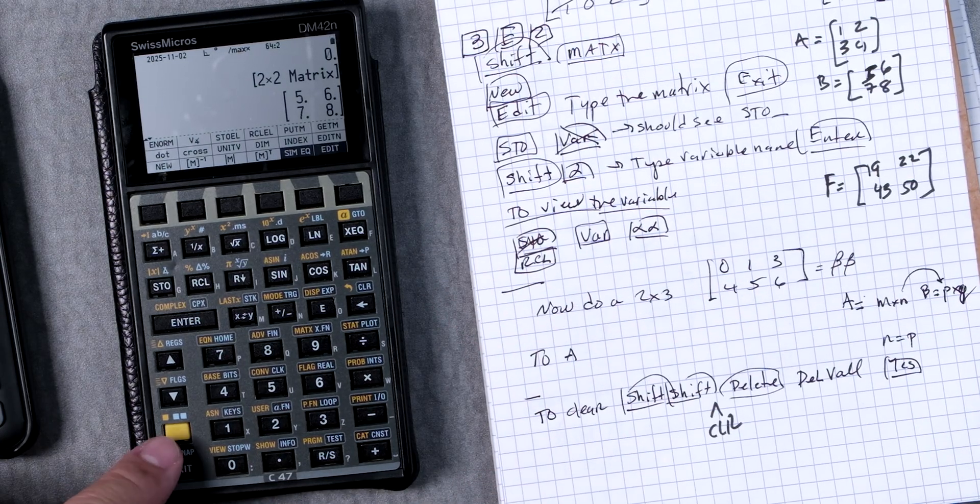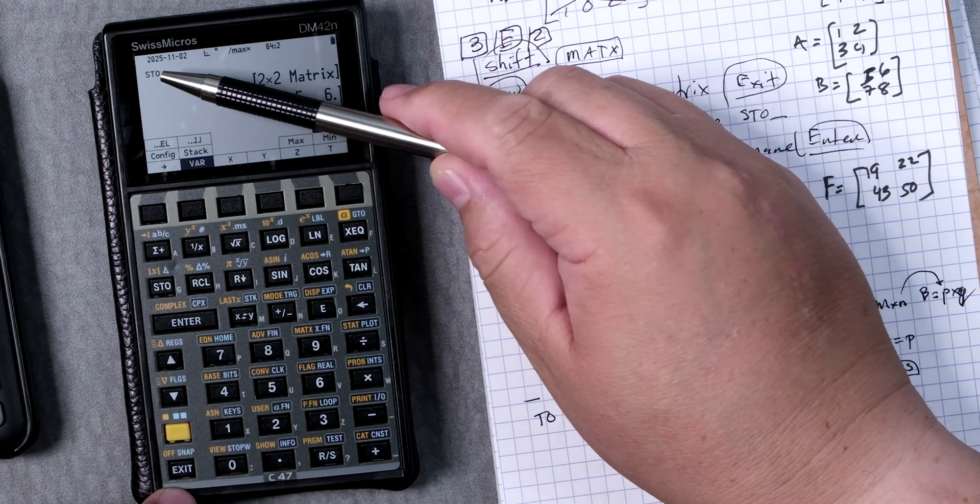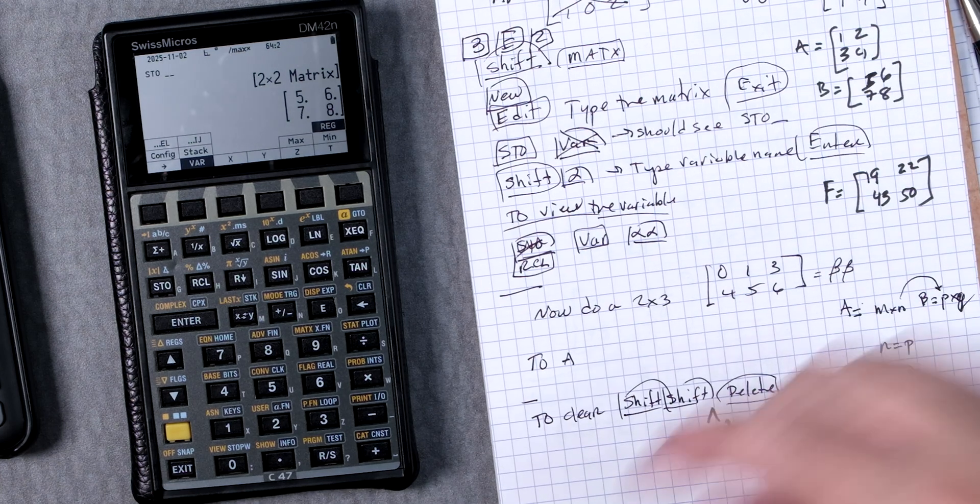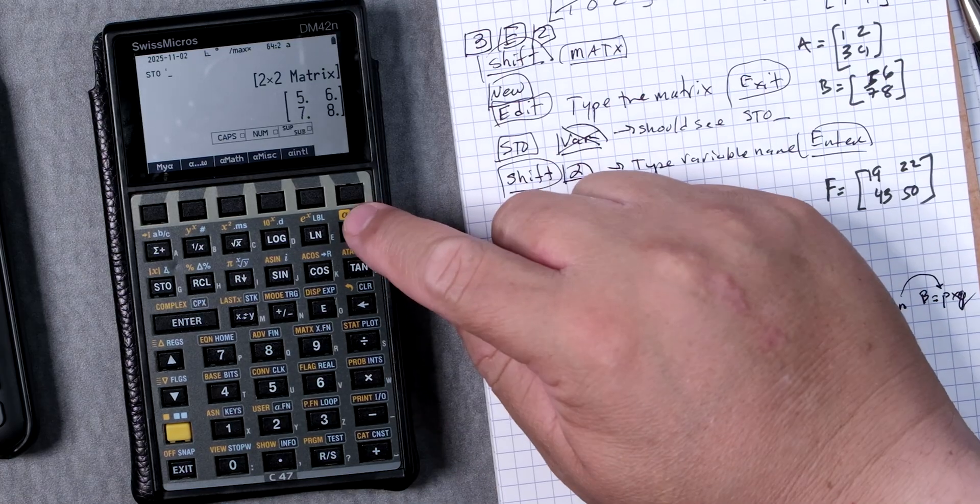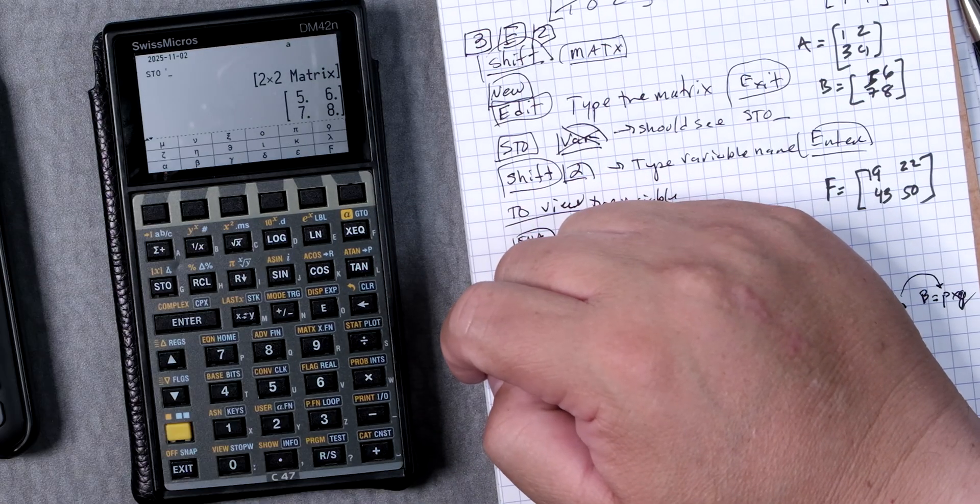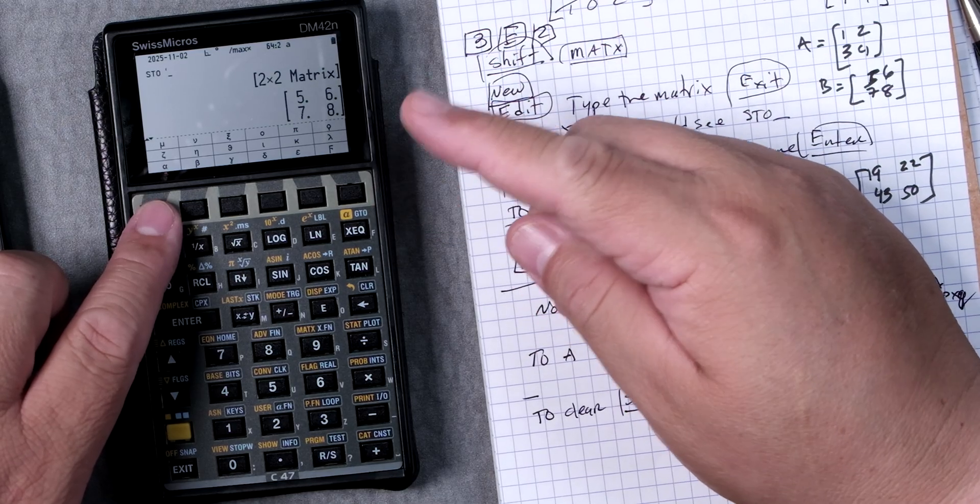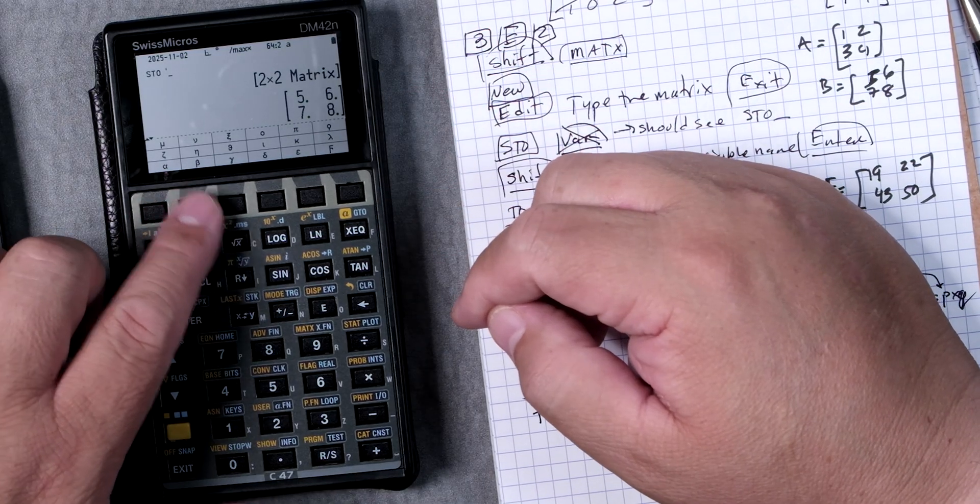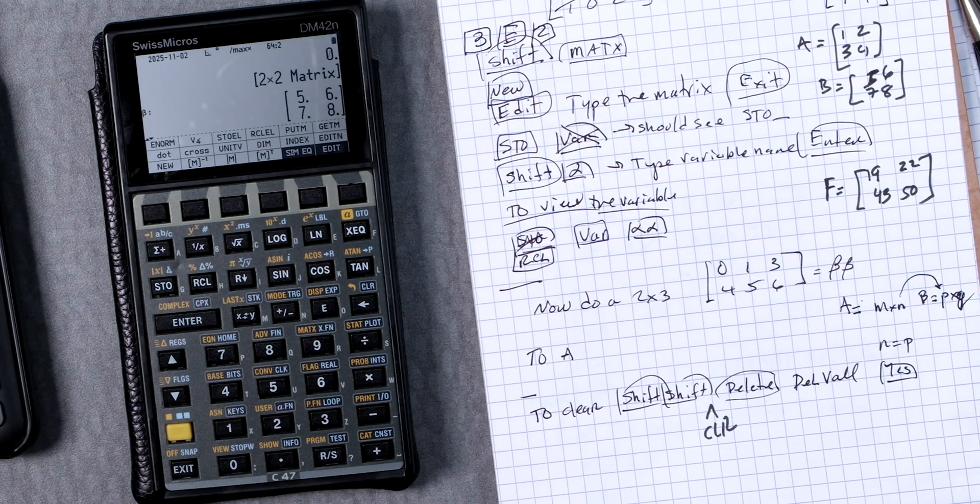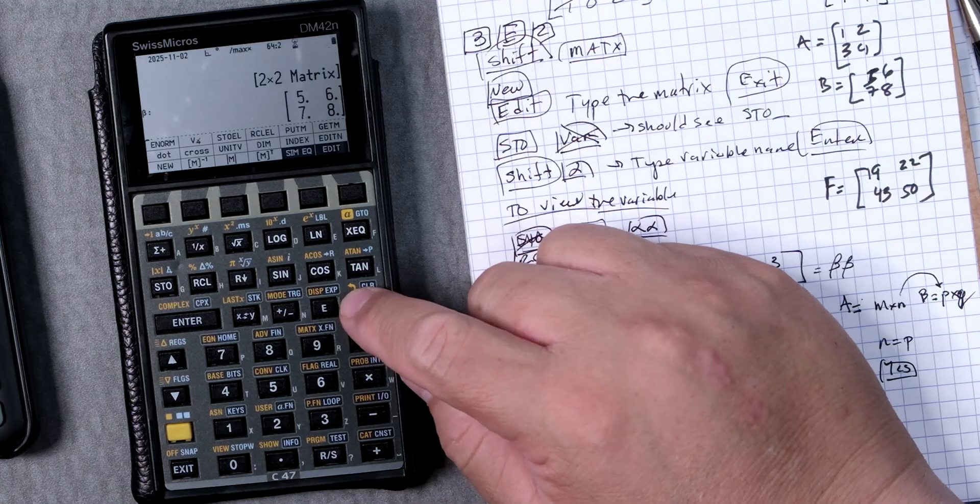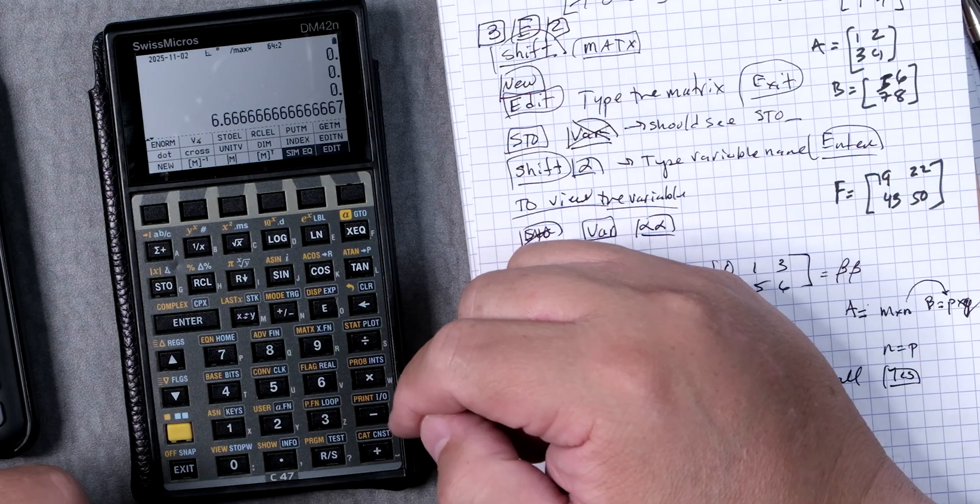I want to name this. So we're going to store. The moment you press store it's asking you what is it. We're going to shift alpha right at the top. We pick another letter. If you pick A again, alpha, it's going to give it that variable but it will delete the other matrix. So I'm going to press beta and then enter. Now we got beta.